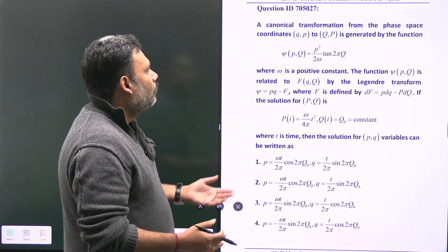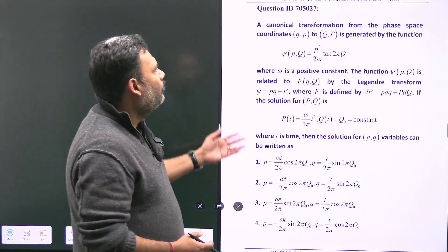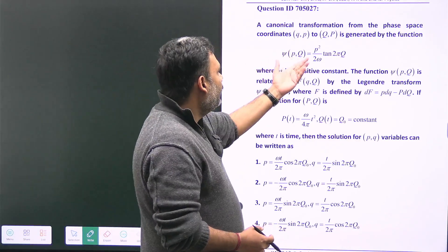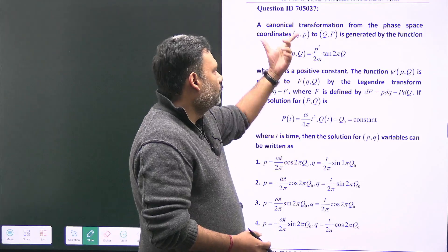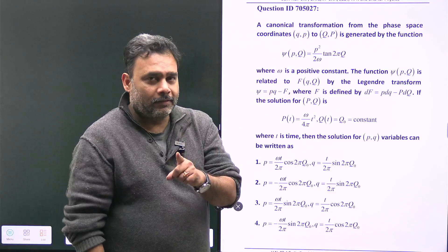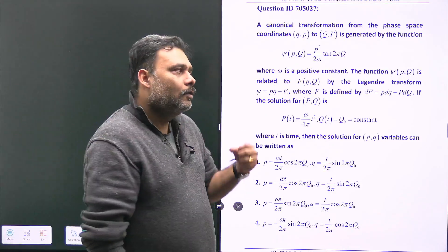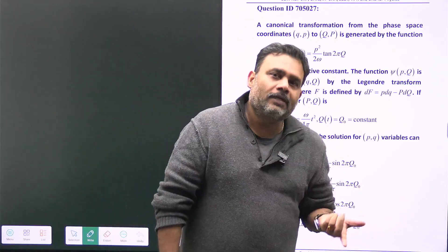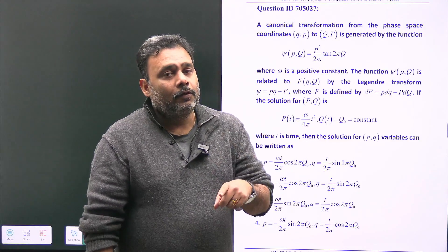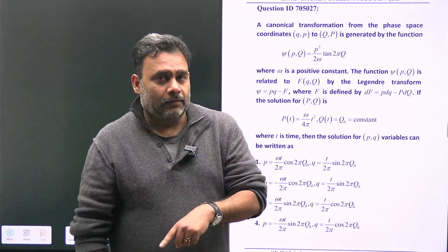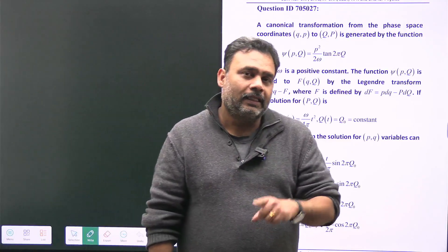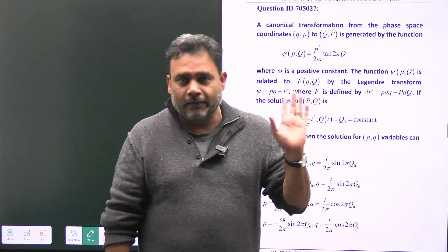What we have is a particular generating function — a function of small p and small q. Don't confuse it with the F3-type generating function, because only those functions which admit an exact differential can be treated as a generating function.